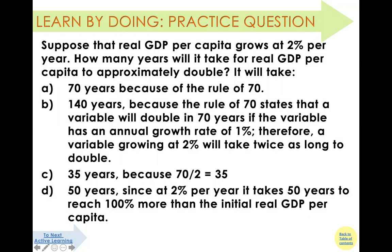Suppose real GDP grows at two percent — how many years will it take for real GDP to approximately double? The answer is straightforward: 70 divided by 2 equals 35 years.